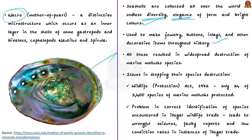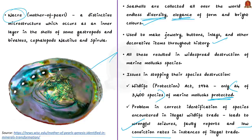This widespread collection has resulted in destruction of marine mollusk species. The main issue is that only 24 out of 3,400 species of marine mollusks are protected under the Wildlife Protection Act of 1972, meaning Indian legislation does not cover all of them. The second issue is correct identification of species encountered in illegal wildlife trade — since only 24 are protected, this leads to wrongful seizures, faulty reports, and low conviction rates. For this reason, NGOs have prepared new tools in the form of cards and posters to enable identification of marine mollusk species.